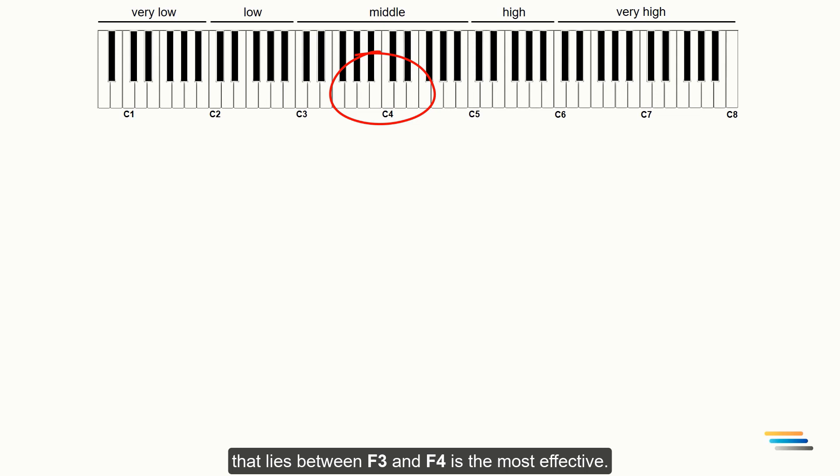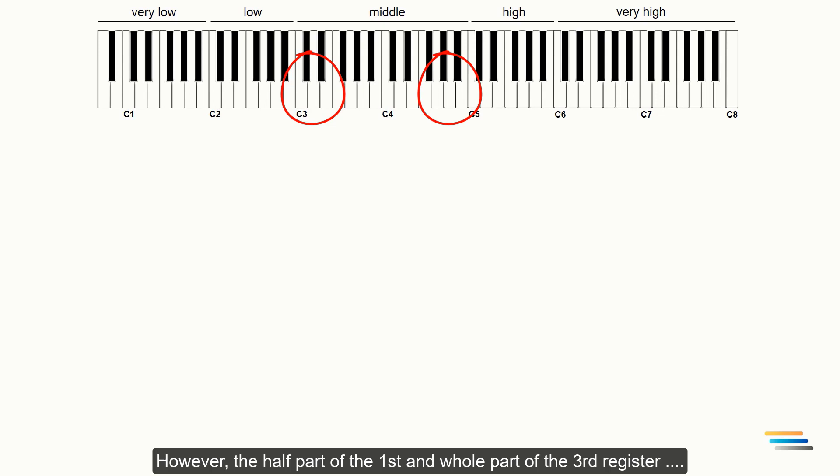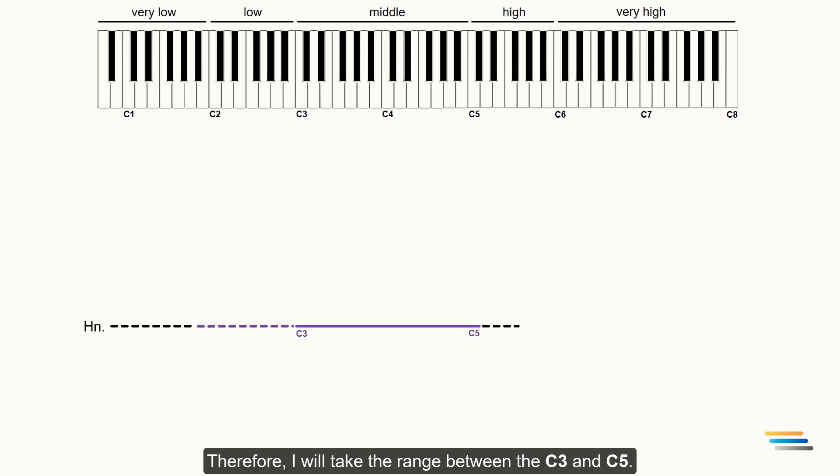However, the half part of the first and the whole part of the third register also work well in unison and octave doubling. Therefore, I will take the range between C3 and C5. The purple whole line indicates the effective register which works in 90% of orchestral scores.